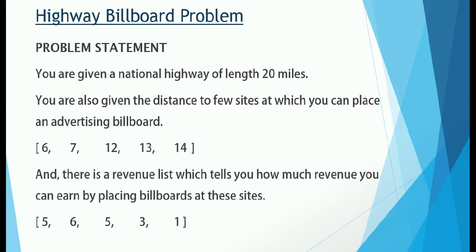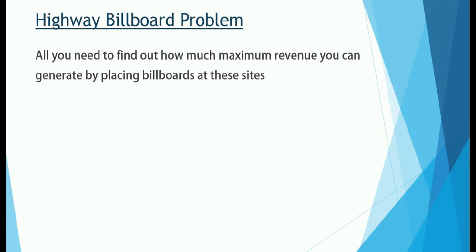Here is the revenue list. If you place an advertising billboard at a site which is at a distance of 6 miles from the point of origin, you will generate a revenue of 5k — that means 5,000. If you place an advertising board at 7 miles from the point of origin, you are going to generate 6 grand. The problem statement is that you need to find out how much maximum revenue you can generate by placing the billboards at these sites.